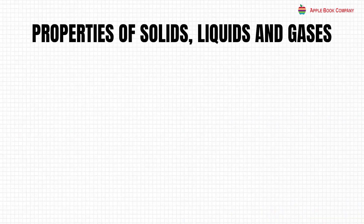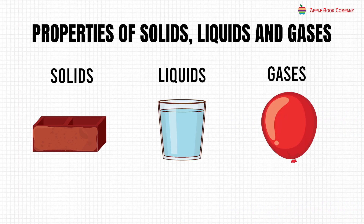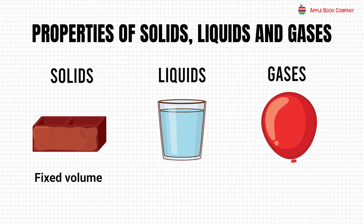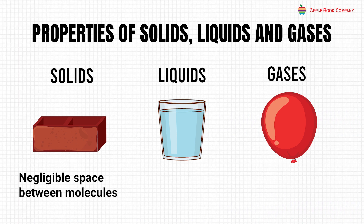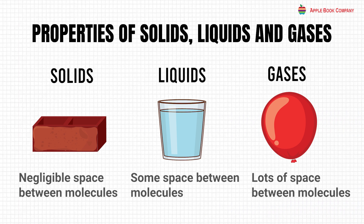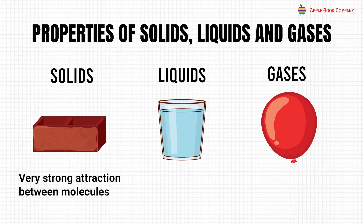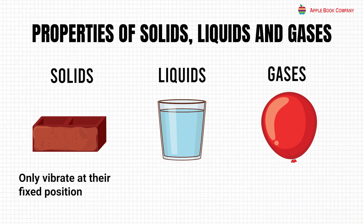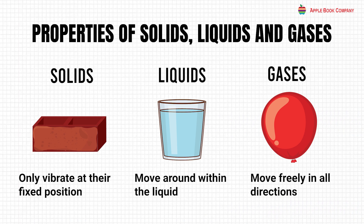Properties of solids, liquids, and gases. Solids have a fixed shape; liquids take the shape of their container; gases have no fixed shape. Solids and liquids have a fixed volume; gases have no fixed volume. Solids have negligible space between molecules; liquids have some space between molecules; gases have lots of space between molecules. Solids have very strong attraction between molecules; liquids have not so strong attraction; gases have very weak attraction. Solids only vibrate at their fixed position; liquids move around within the liquid; gases move freely in all directions.